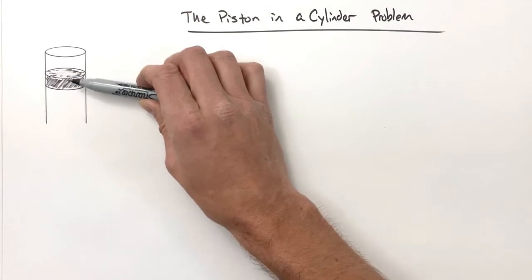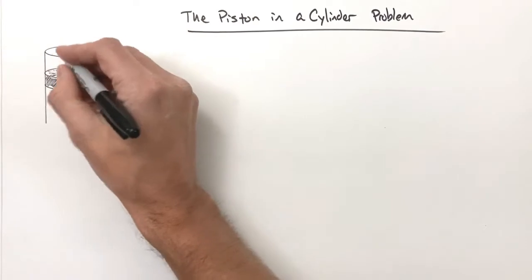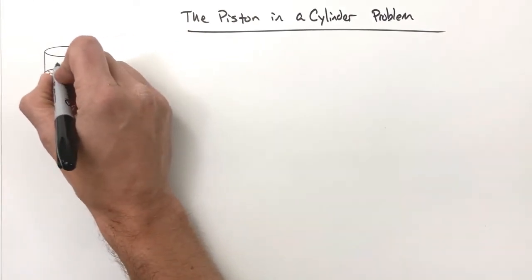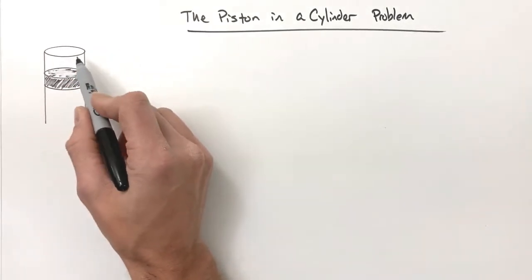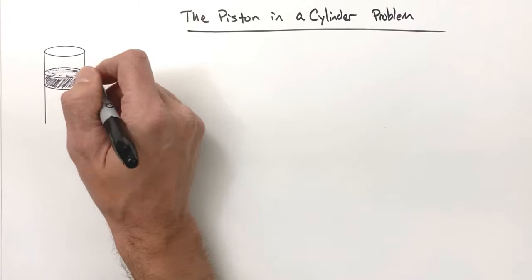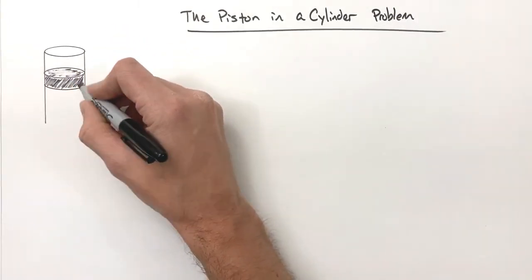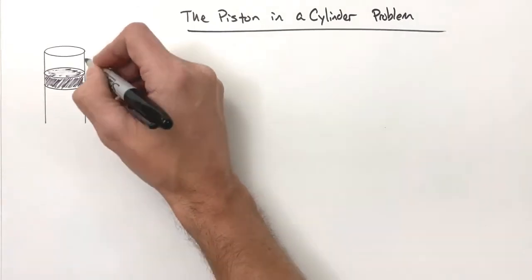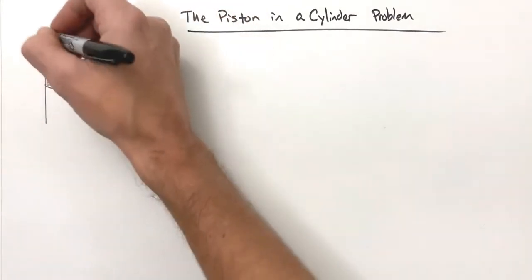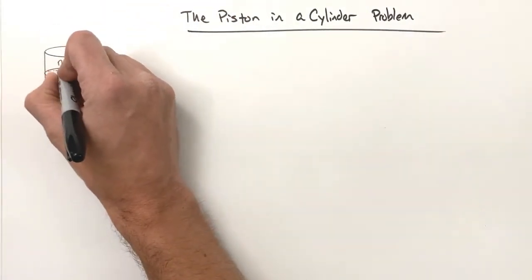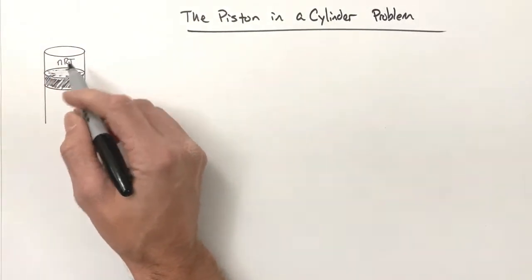What I want you to look at in this problem is we have some object that is containing some amount of confined ideal gas in this space right here. That confined ideal gas is going to push this piston downward. This confined ideal gas has some quantity — we're going to say there's nRT worth of gas in here.